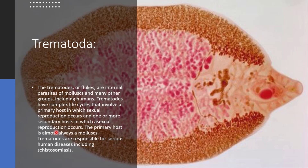The primary host is almost always a mollusk — soft-bodied invertebrates with a shell, which we will cover in detail in future videos. Trematodes are responsible for serious human diseases, including schistosomiasis.